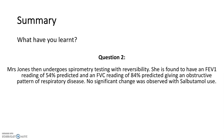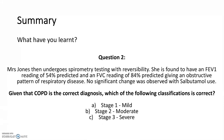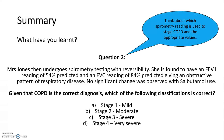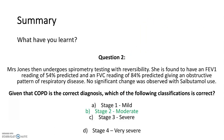Mrs Jones then undergoes spirometry testing with reversibility. She is found to have an FEV1 of 54% and an FVC of 84%, giving an obstructive pattern of disease. No significant change was observed on testing reversibility. Which classification of COPD severity is correct? The correct answer is stage 2, because her FEV1 value is between 50% and 80% predicted.